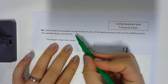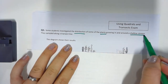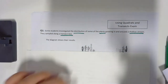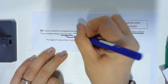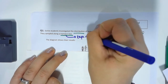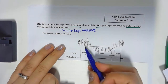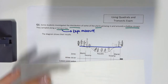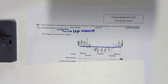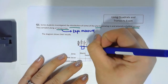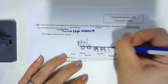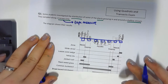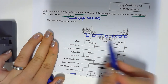Question one: some students were investigating the distribution of plants growing around a shallow stream and they sampled along a transect line. A transect is like a tape measure put across an area. They sampled along this line using quadrats — square frames used to sample and count the organisms or plants along the transect — and we have data for different zones.